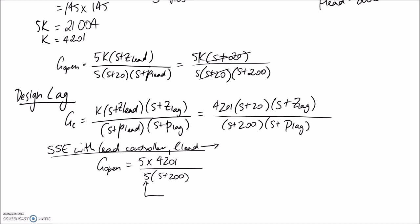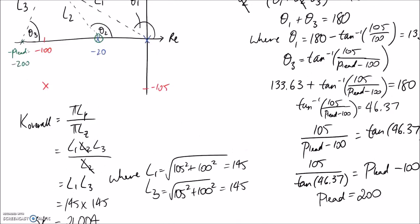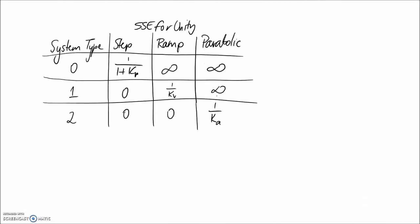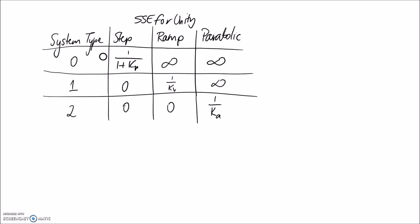We can see there is one S on the bottom line, acting as an integrator. Since we have one of them, it's a type one system. We're aiming for a steady state error of 0.001 for a unity ramp input. From the steady state error table, a type one system with a ramp input gives a finite steady state error, confirming the requirement is achievable.